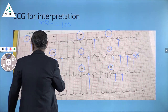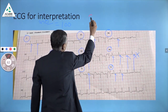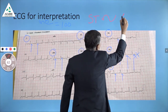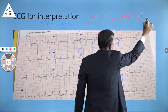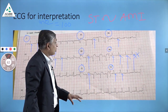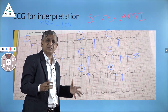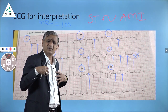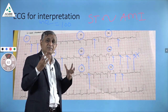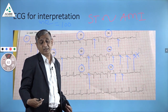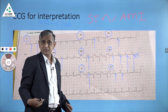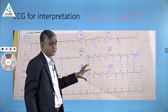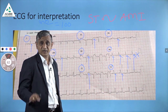This ST elevation is very important because ST elevation is generally related with acute myocardial infarction. When your patient presents with severe chest pain, nausea and vomiting, and profuse sweating — these three cardinal features — and the ECG shows such a picture, you should think about acute myocardial infarction.